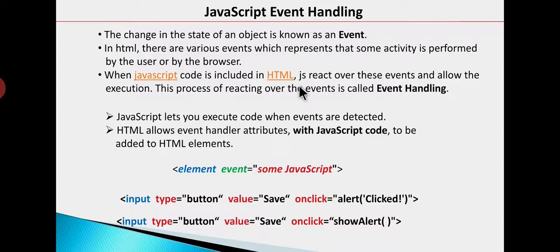If we minimize the window then it will reduce the size of the window, which is an event. If you click on a button, that will also be an event. So if there is any object whose state changes, we call it an event. We want to handle these events — when an event occurs we want to perform some actions.